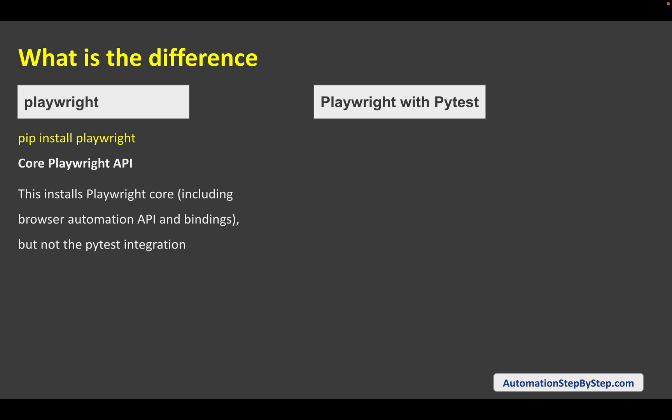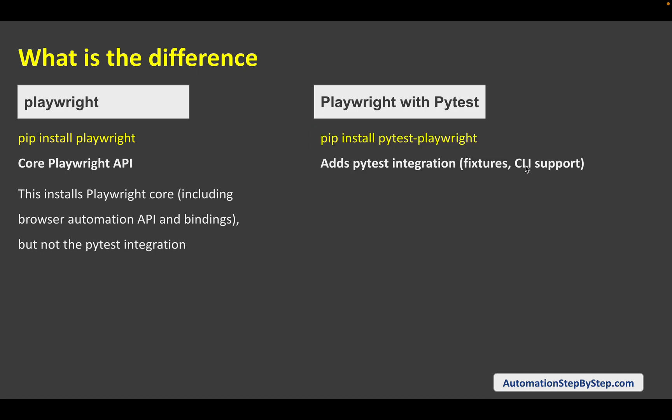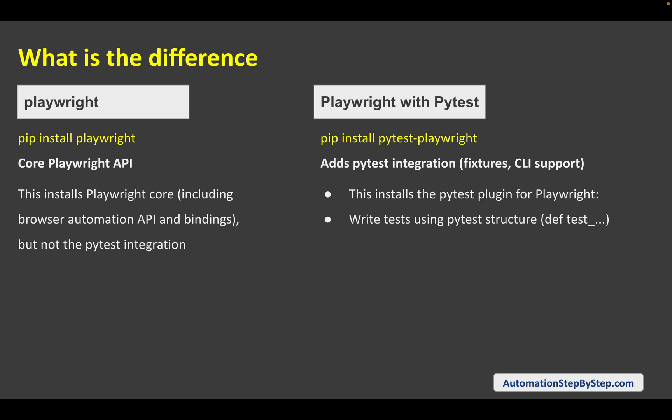When we run the command `pip install pytest-playwright`, we install Playwright with the pytest plugin. With pytest we get some extra features and options like fixtures, CLI support, and browser support. At a high level, along with the Playwright features we already have, we get some extra features that are very useful and efficient for testing.